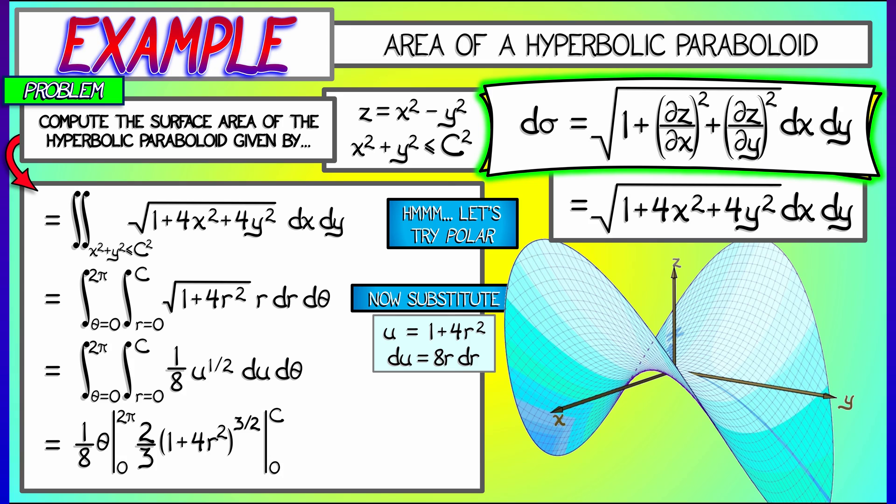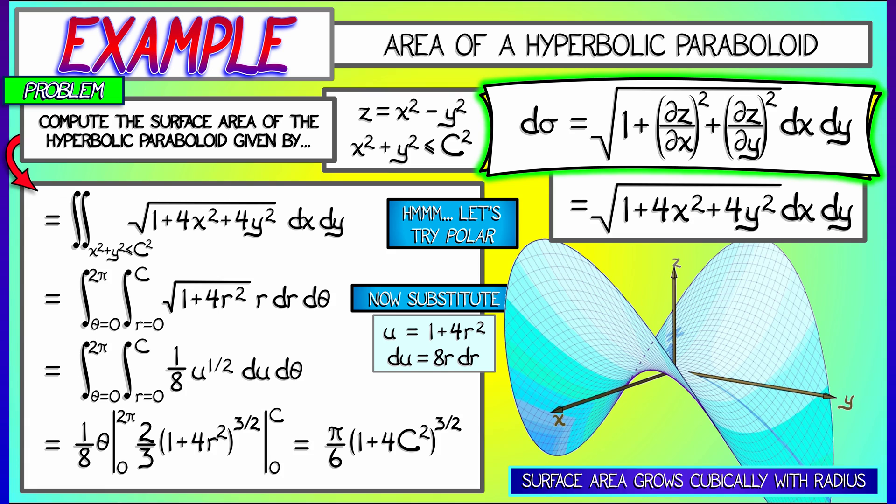This gives me, with some algebra, a final answer of pi over 6 times quantity 1 plus 4c squared to the 3 halves. And that's kind of cool. That means that the asymptotics of how this surface area grows is cubic in the radius c. This is like some constant times c cubed. That's kind of interesting if you think about what this hyperbolic paraboloid looks like. That's a fun problem.